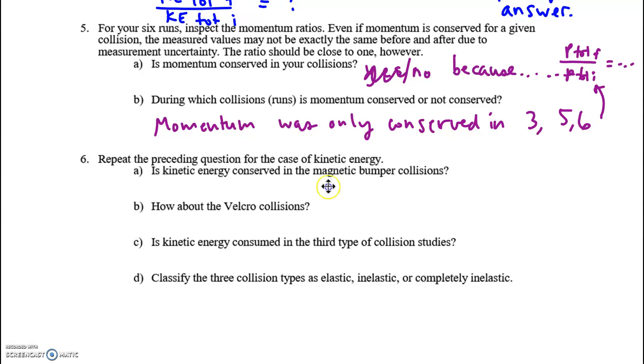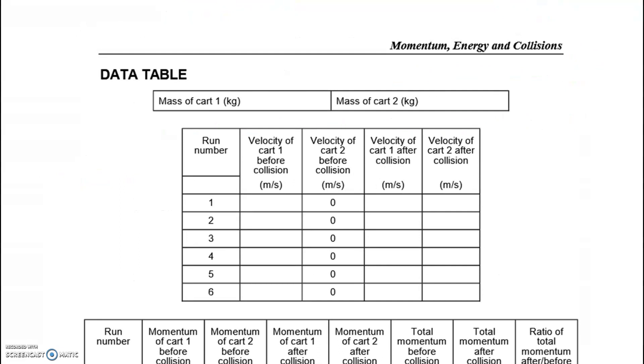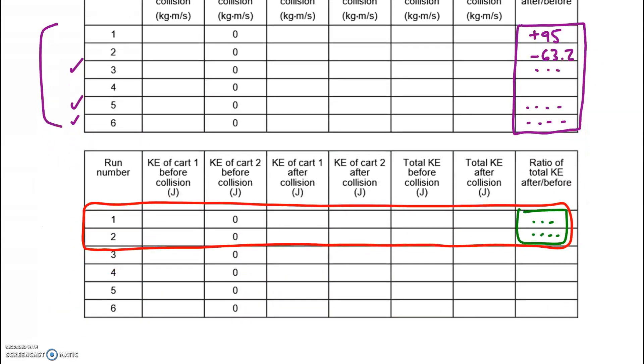Then you do the same thing for the kinetic energy. But this question is asking only about trials one and two. For those, was kinetic energy conserved? Okay. Trials one and two, that means you only care about the magnetic bumpers. These first two trials, you'll recall.